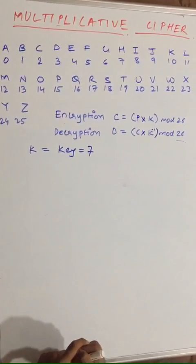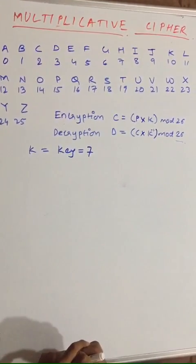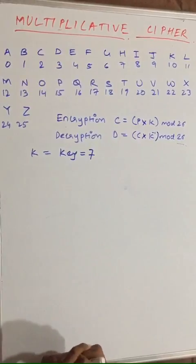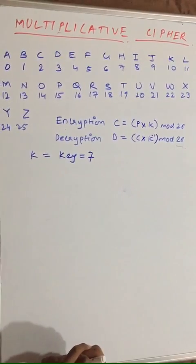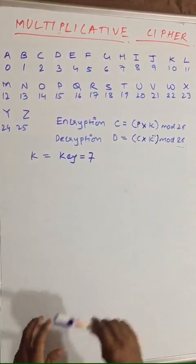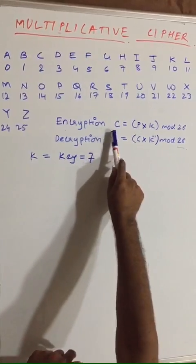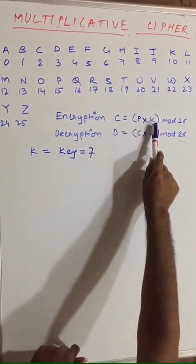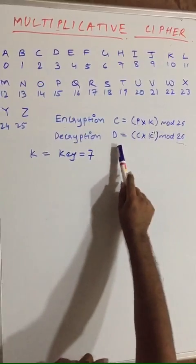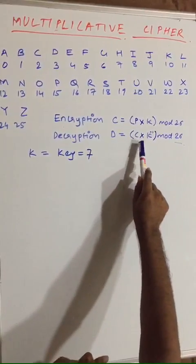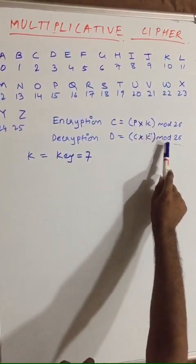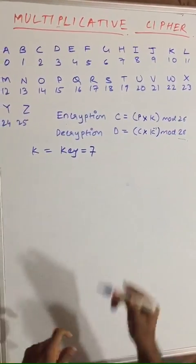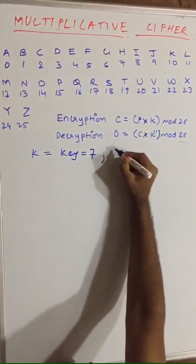In this lecture we are going to learn about how to solve multiplicative cipher. For multiplicative cipher, the encryption formula is C = P × K mod 26, and decryption is C × K⁻¹ mod 26.